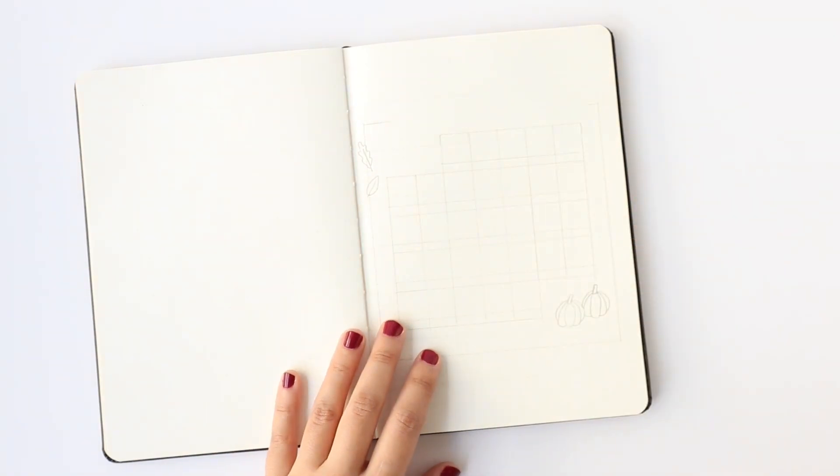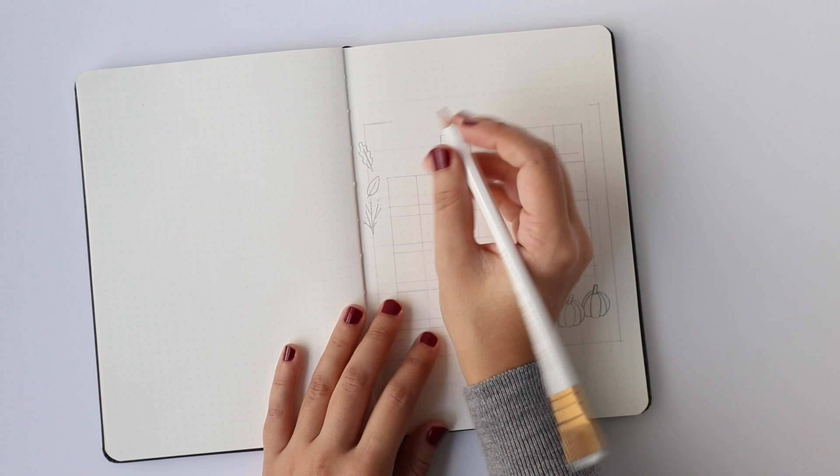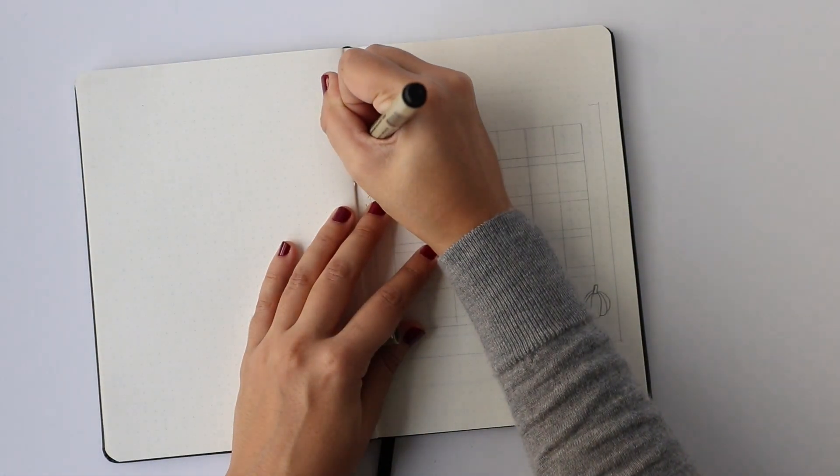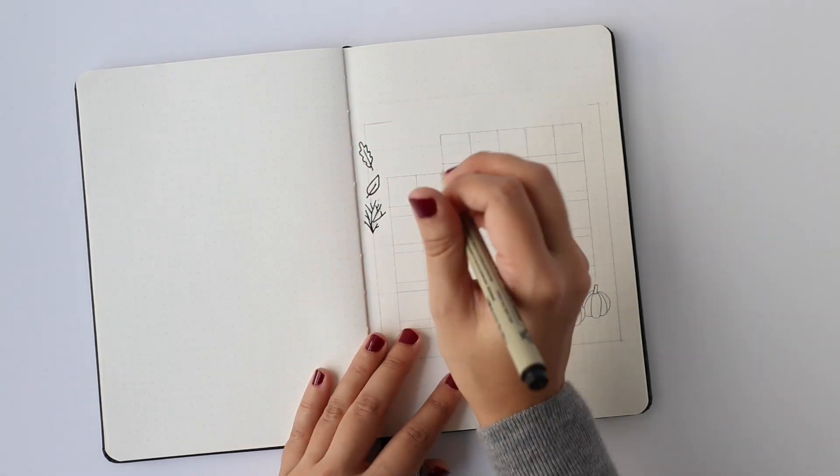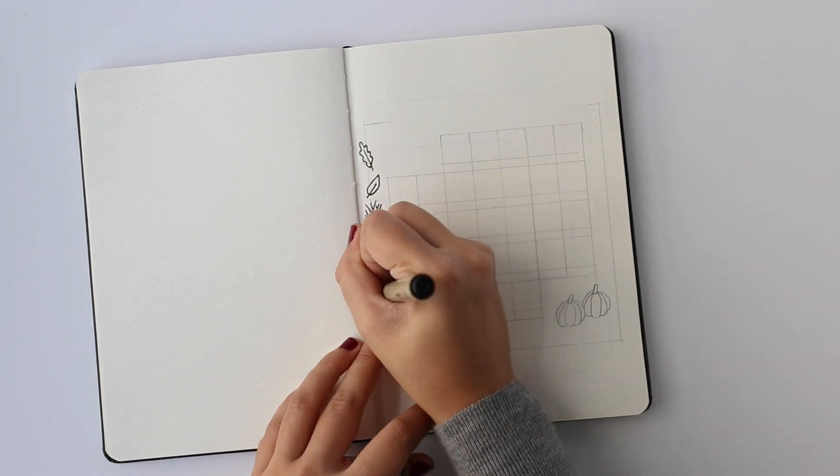More on them in a little bit, but let's start off with the month at a glance. This month I opted for a one-page month at a glance and one thing I knew I wanted to incorporate into this spread and all the spreads this month was some real fall vibes. This is my favorite time of the year so I want that represented in my bullet journal.